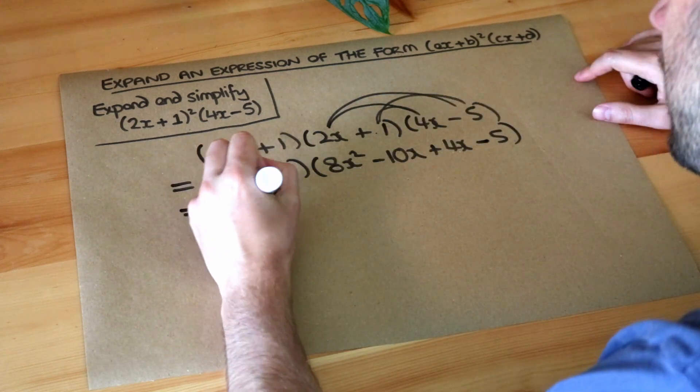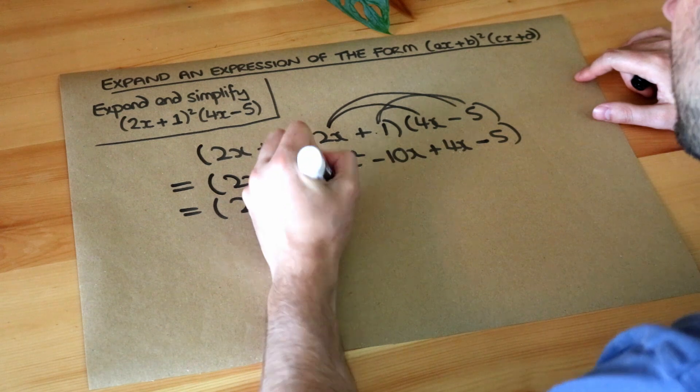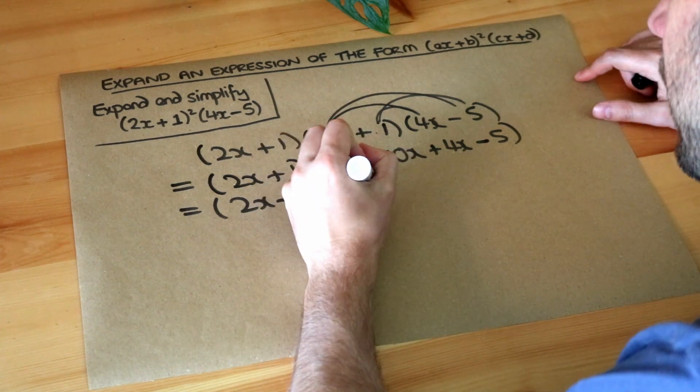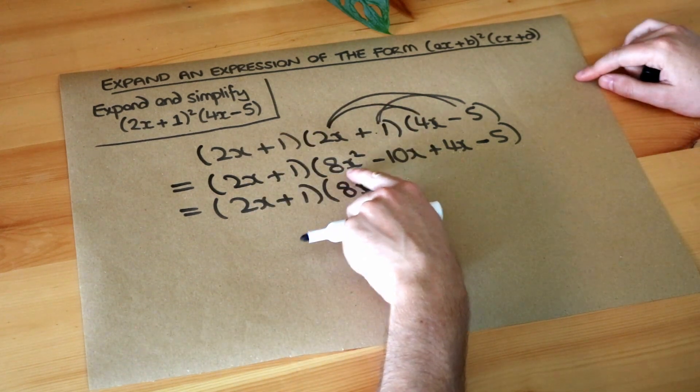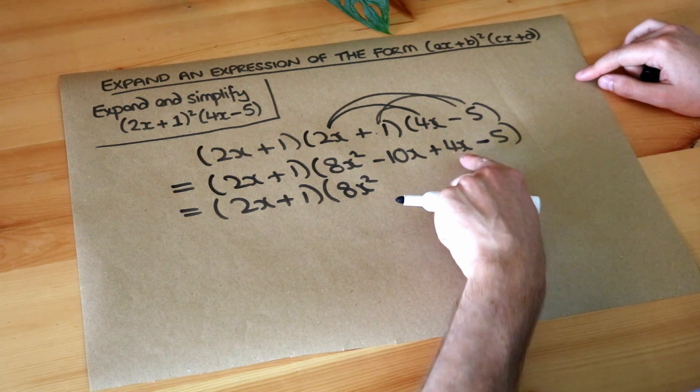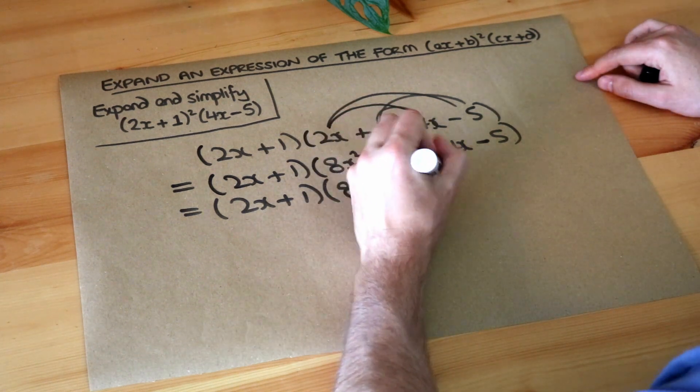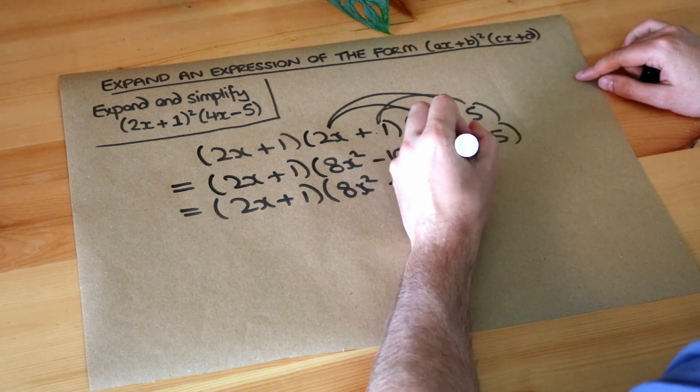And let's just tidy up that second bracket by collecting like terms. We've only got one x squared term but we've got minus 10x plus 4 lots of x. That's minus 6x. We still got that minus 5 there, the constant term.